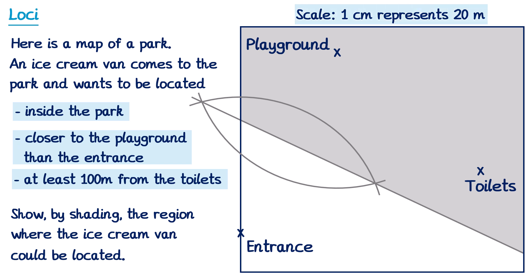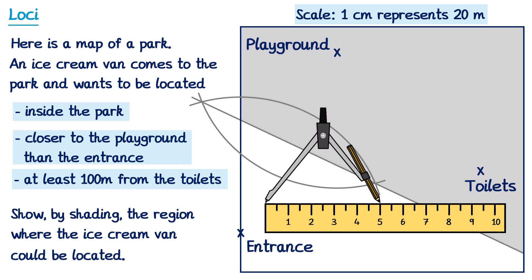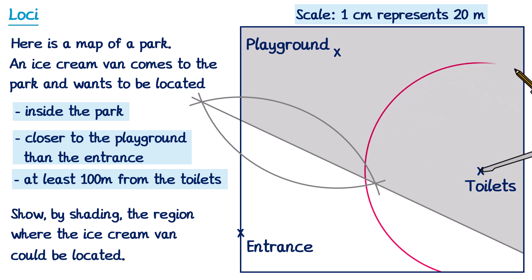The map has a scale: 1cm represents 20 metres. We need at least 100 metres from the toilets, so we convert: to get from 20m to 100m we multiply by 5, meaning 1cm × 5 = 5cm on the map. So 100 metres corresponds to 5cm on the map. We set the compasses to 5cm, draw an arc around the toilets, and remove all points inside that circle since we want to be at least 100m away. The remaining overlapping region is where the ice cream van could be.